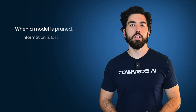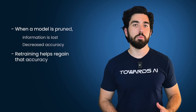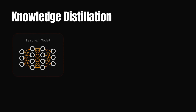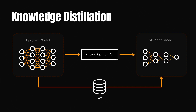But how does retraining work? When a model is pruned, some information is inevitably lost, leading to decreased accuracy. Retraining helps regain that accuracy. NVIDIA compared two strategies: the first is conventional training using ground truth labels, and the second is knowledge distillation, where the pruned model — the student — learns from the unpruned model — the teacher. Knowledge distillation is when a smaller model learns from a larger model by mimicking its outputs and internal behaviors.